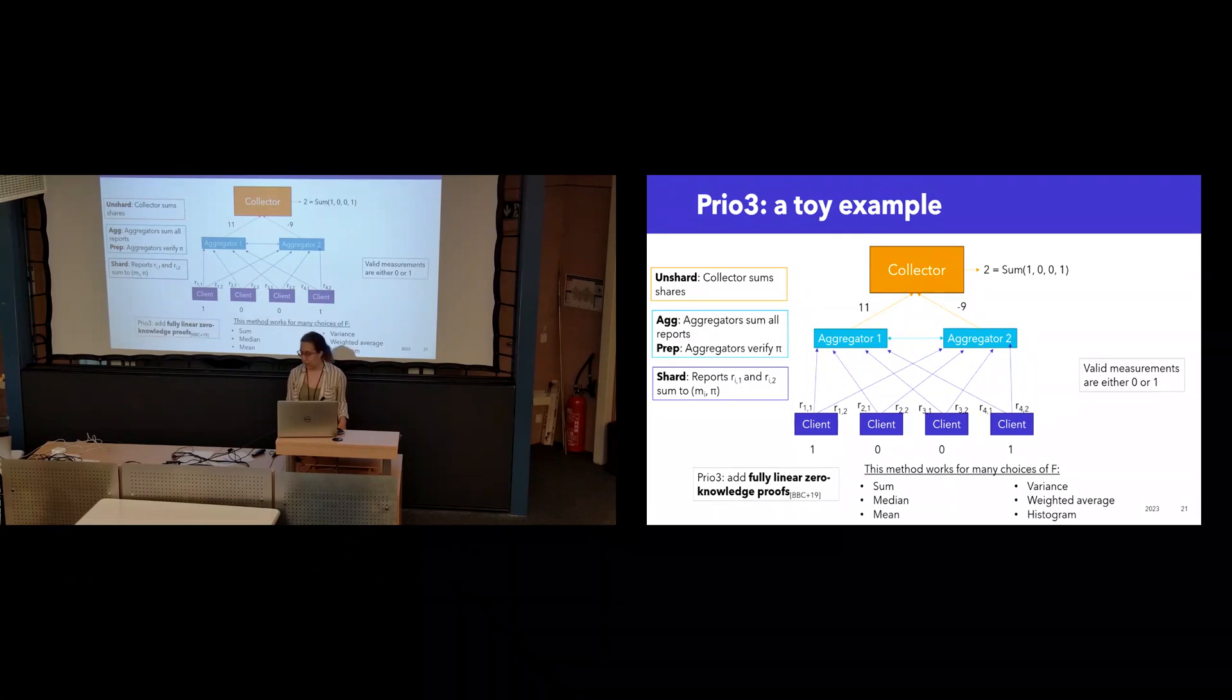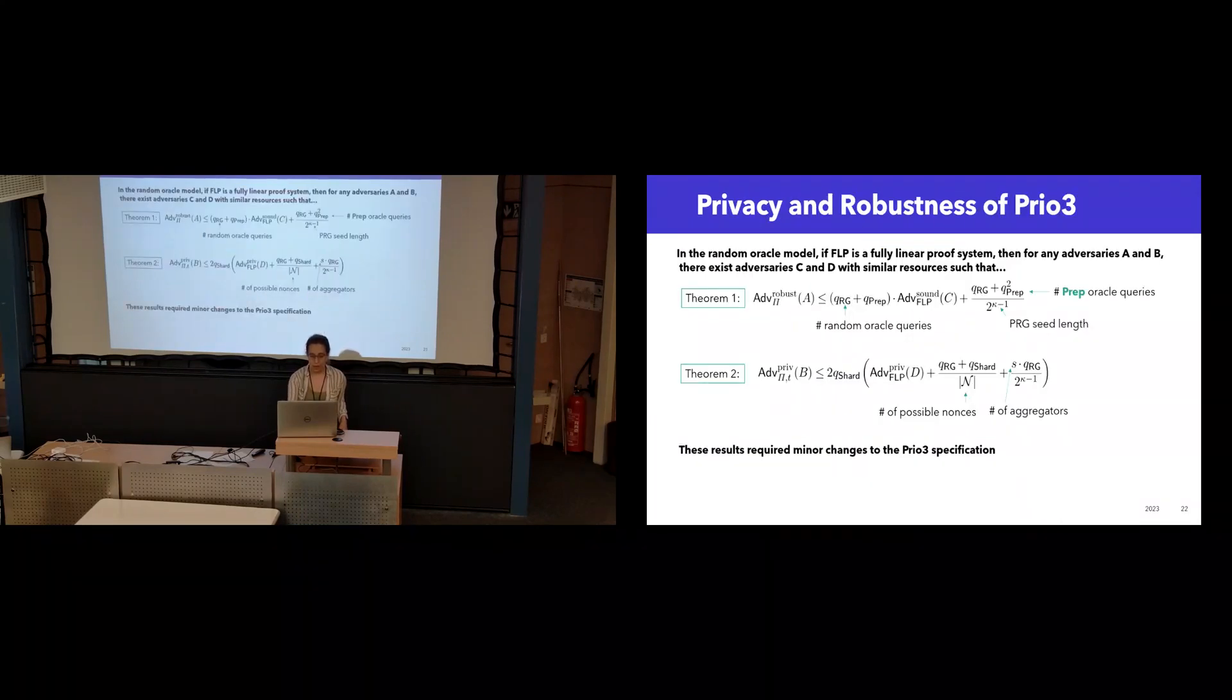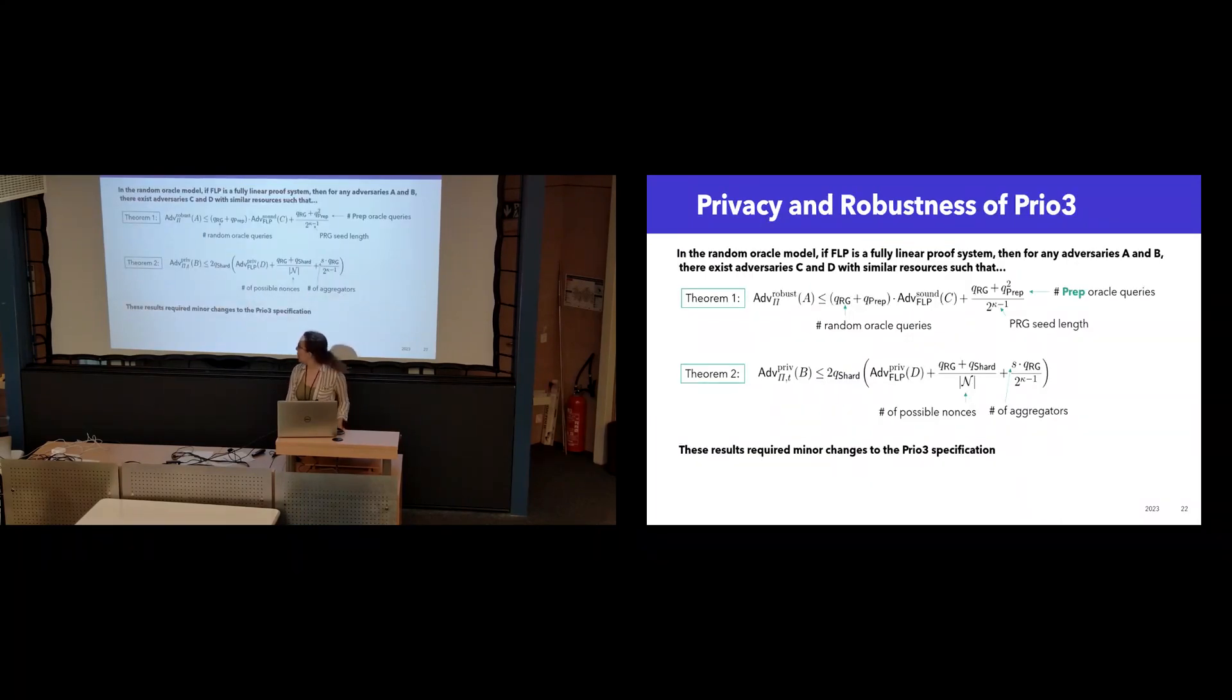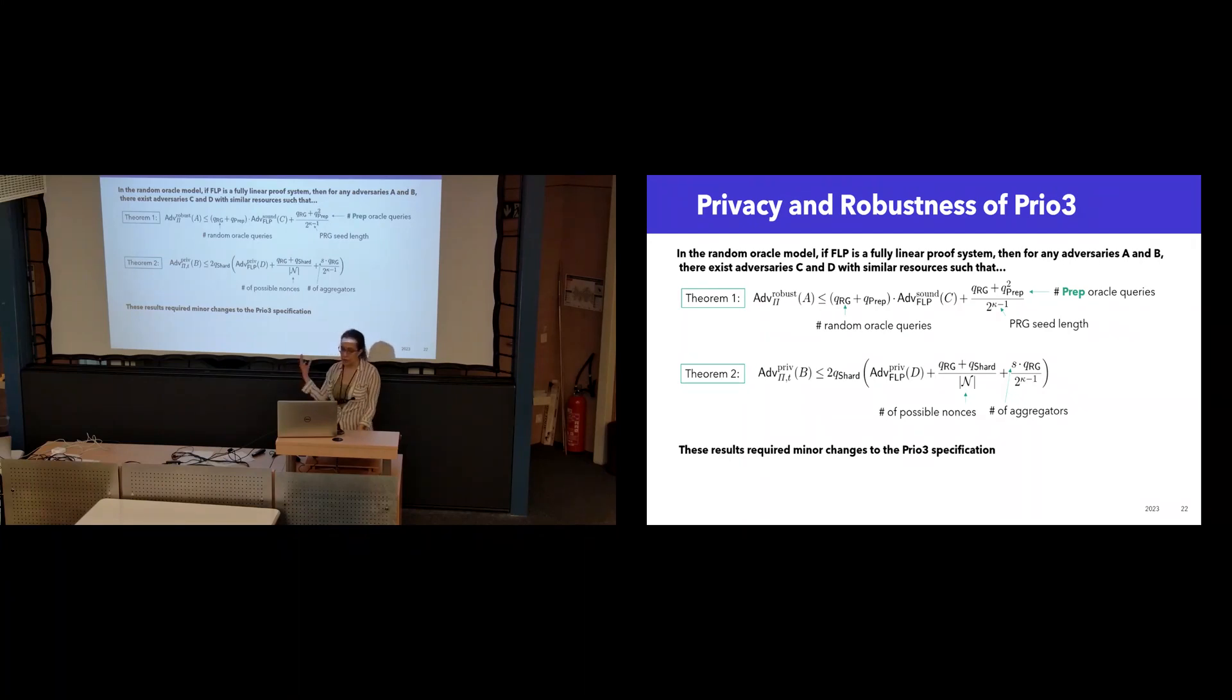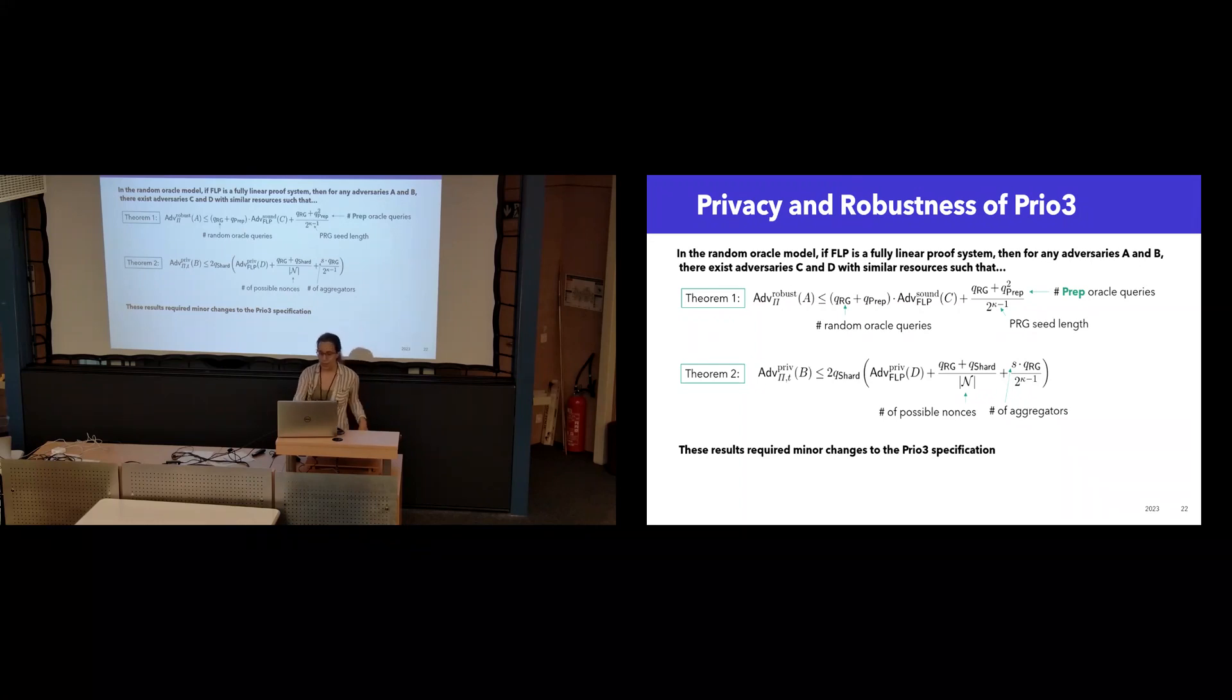So PRIO3 works not just for sums, but for a variety of other aggregation functions. And so we looked at PRIO3 within a formal privacy model, and for any aggregation function, we're able to reduce the security of the PRIO3 construction to the security of its underlying fully linear proof system. We did have to change the specifications slightly to achieve these results, but nothing major, everything was incorporated into the next draft of the standard without any impact on efficiency.